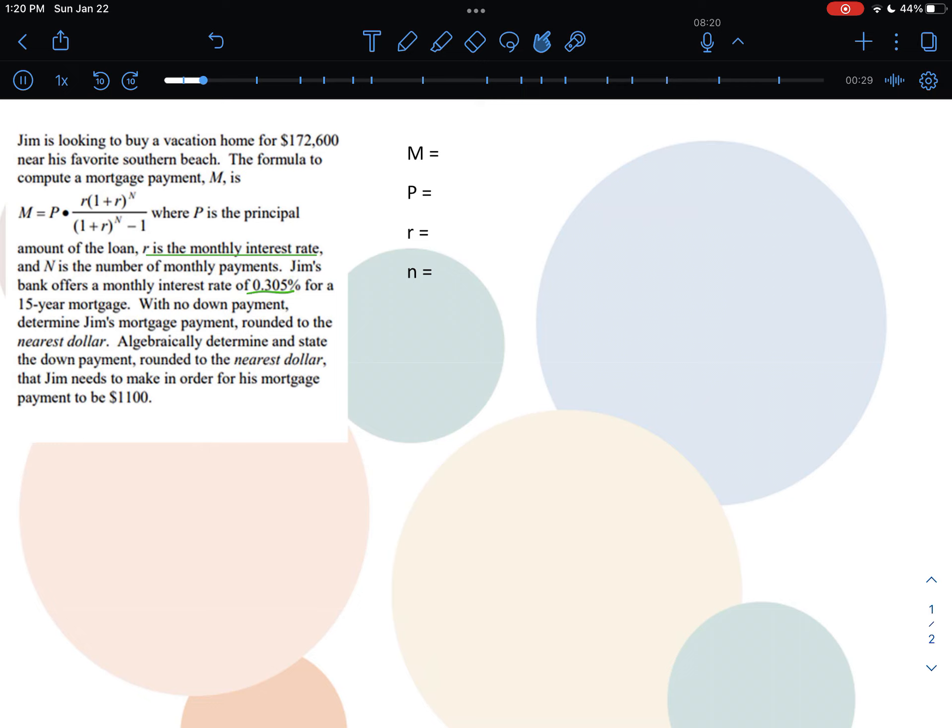The question says: Jim is looking to buy a vacation home for $172,600 near his favorite southern beach. The formula to compute a mortgage payment M is given, where P is the principal amount of the loan, r is the monthly interest rate, and n is the number of monthly payments. Jim's bank offers a monthly interest rate of 0.305% for a 15-year mortgage with no down payment. Determine Jim's mortgage payment rounded to the nearest dollar. Algebraically determine and state the down payment rounded to the nearest dollar that Jim needs to make in order for his mortgage payment to be $1,100.